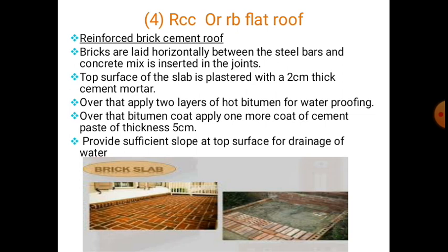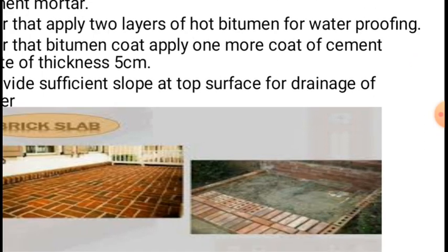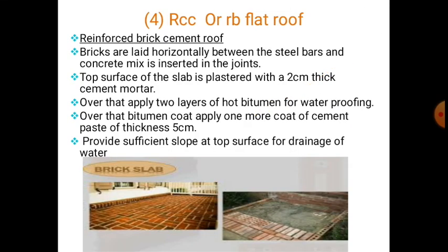In the reinforced brick flat roof, bricks are laid horizontally between steel bars and concrete mix is inserted in the joints. The top surface of the slab is plastered with 2 cm thick cement mortar. After that, two layers of hot bitumen are applied for waterproofing, followed by one more coat of approximately 5 cm thick cement facing. Finally, a sufficient slope is provided at the top surface for draining water.